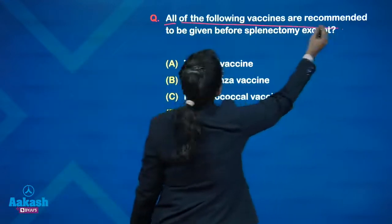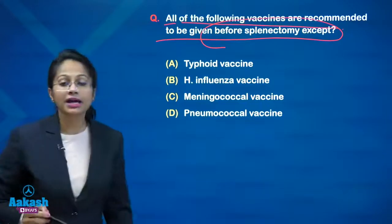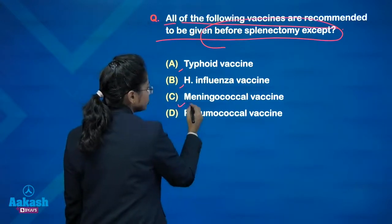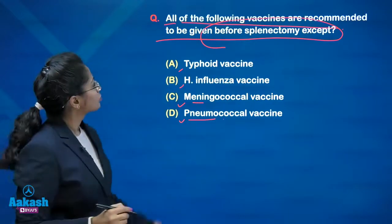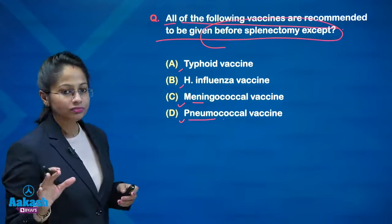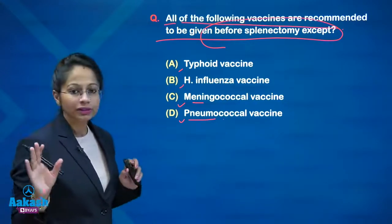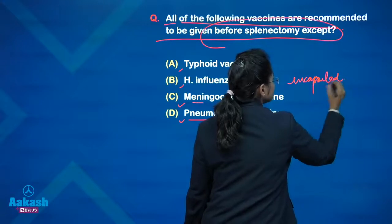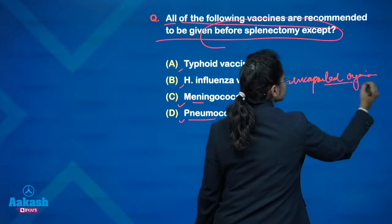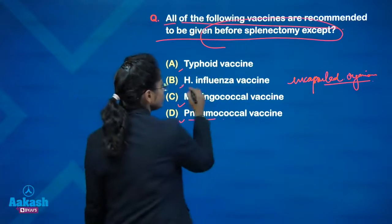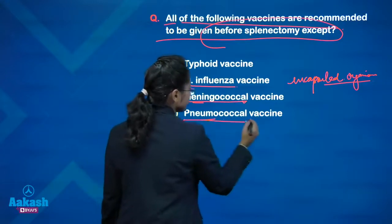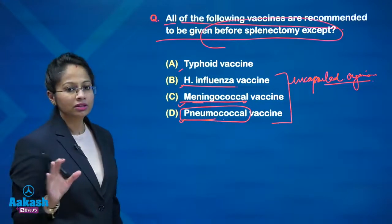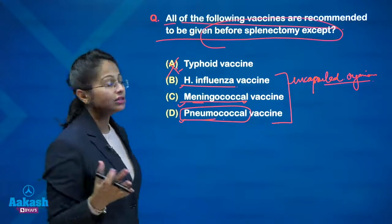Next question: all of the following vaccines are recommended to be given before splenectomy except. Options are typhoid vaccine, H. influenzae vaccine, meningococcal vaccine, and pneumococcal vaccine. After splenectomy, infections by encapsulated organisms are very common because there is no spleen to filter. Encapsulated organisms are Haemophilus influenzae, Neisseria meningitidis, and Streptococcal pneumoniae. So these three vaccines are very important to give before splenectomy. Typhoid vaccine is not necessary before splenectomy.